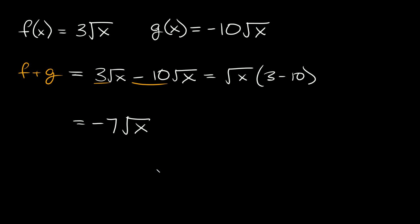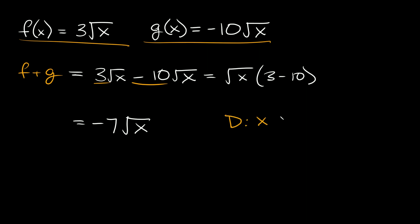Now let's talk about the domain. There are two things you want to look at: first, the two original functions, and then your combined answer. The domain is basically just the x values that we can and can't have — in other words, restrictions. In both of these cases, x cannot be any negative number because we can't take the square root of a negative number. So x has to be all positive real numbers: x is greater than or equal to 0, or in interval notation, [0, ∞).